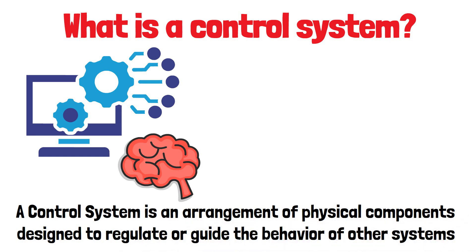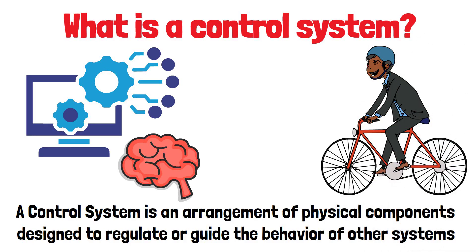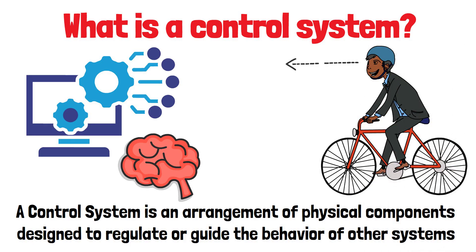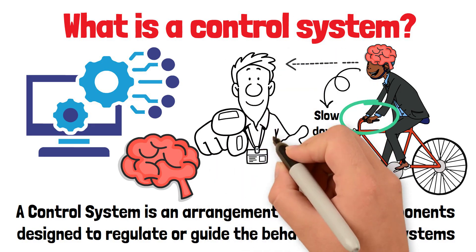Let's look at an example you know. Imagine you're riding a bicycle. Your eyes see if you're going too fast. Your brain decides to slow down. Your hands pull the brakes. And the bicycle slows down. That is you acting as a control system.